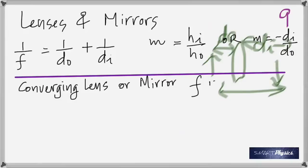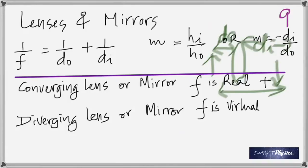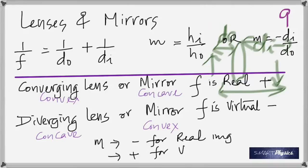To summarize: a converging (convex) lens behaves like a concave mirror. A diverging lens behaves like a convex mirror or concave lens. The whole chapter can be summarized in one table.